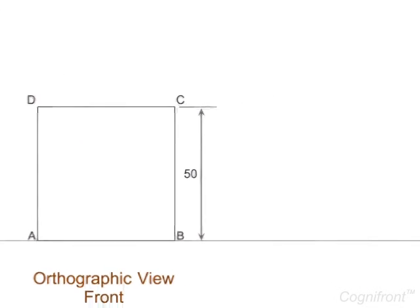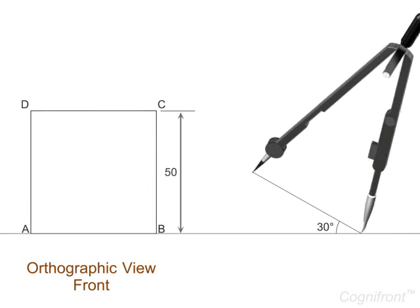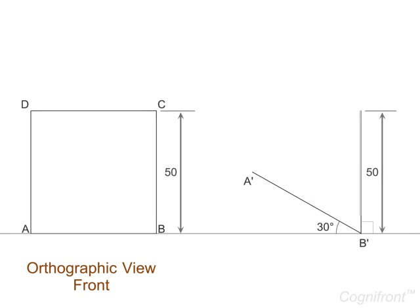Now, let's describe the isometric views. In isometric view, the horizontal lines in orthogonal view appear as inclined lines making an angle of 30 degrees with reference line. Let's mark inclined lines B'A' and C'D' equal to BA and CD.